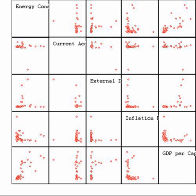Design of experiments uses blocking to reduce the influence of confounding variables, and randomized assignment of treatments to subjects to allow unbiased estimates of treatment effects and experimental error. At this stage, the experimenters and statisticians write the experimental protocol that will guide the performance of the experiment and which specifies the primary analysis of the experimental data. Performing the experiment follows the experimental protocol, and the data are analyzed following that protocol.